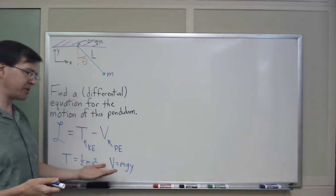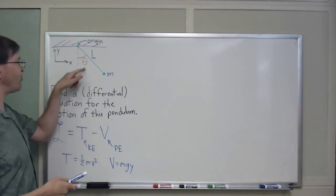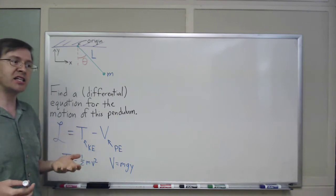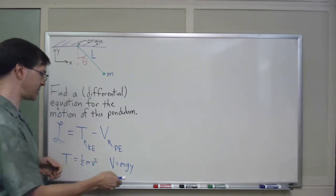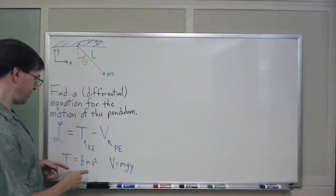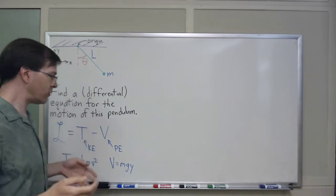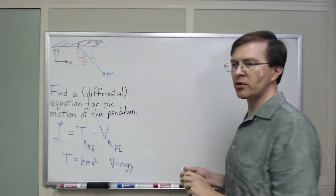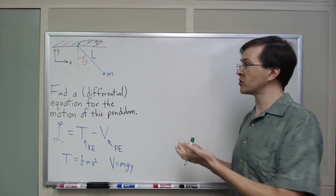These are my kinetic and potential energy. I need to write these in terms of theta, because theta is my one coordinate, a generalized coordinate in this system. And so, I want to write y and speed in terms of that coordinate. Well, to do that, I guess what I want to do is first write down what x and y are in terms of theta.